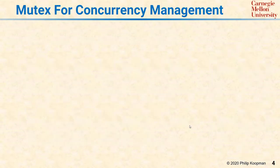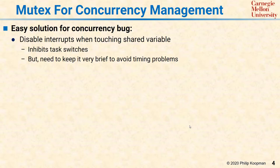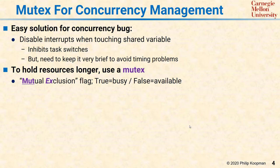Concurrency bugs that involve a race condition to a shared resource can be solved by using a mutex, where mutex stands for mutual exclusion. The easy solution is to disable interrupts when touching a shared variable — it inhibits task switches, but you need to keep this very brief in order to avoid timing problems. If you need to hold a shared resource for more than a handful of clock cycles, you can use something heavier weight called a mutex, which is a mutual exclusion flag.